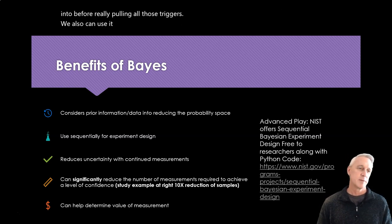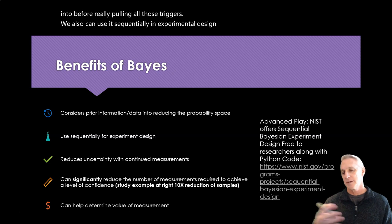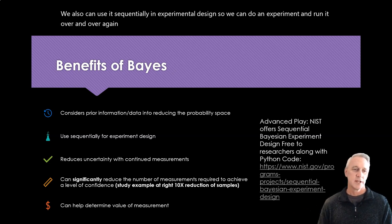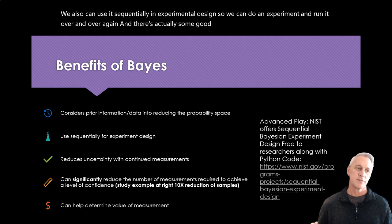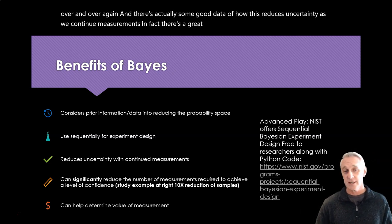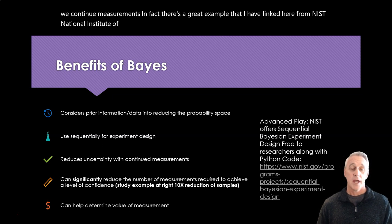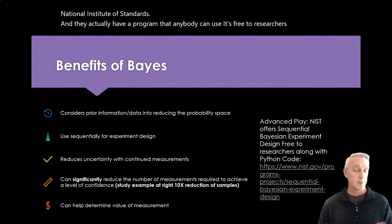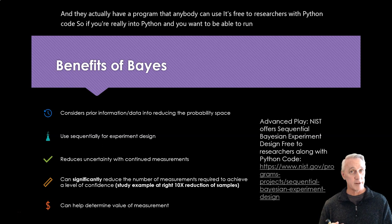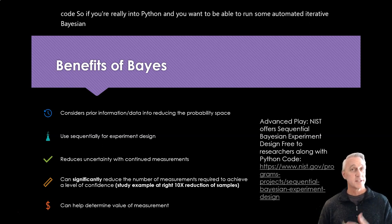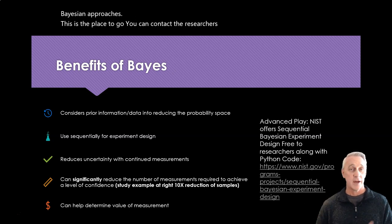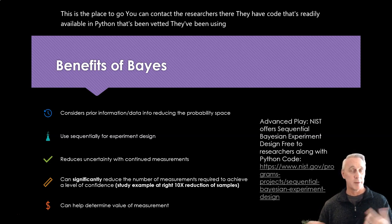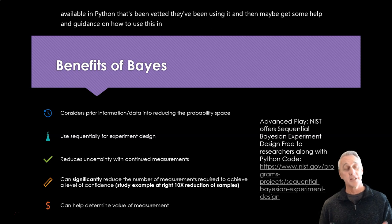We can also use Bayes sequentially in experimental design — we can run an experiment over and over again, and there's good data showing how this reduces uncertainty as we continue measurements. There's a great example linked from NIST, the National Institute of Standards. They have a free program for researchers with Python code. If you're into Python and want to run automated iterative Bayesian approaches, that's the place to go. The code is vetted and readily available.